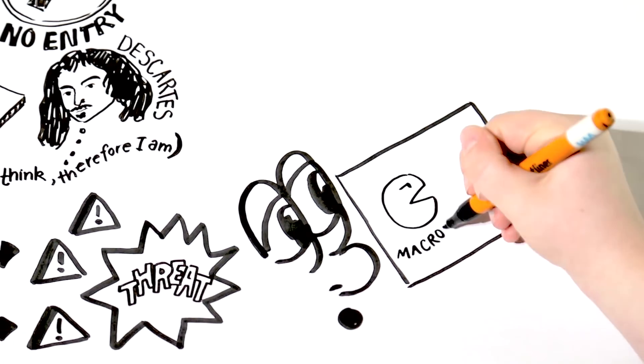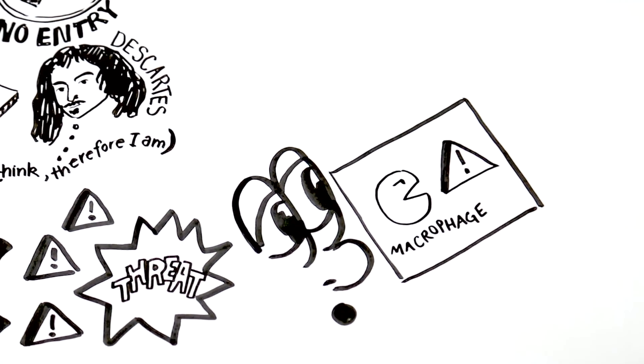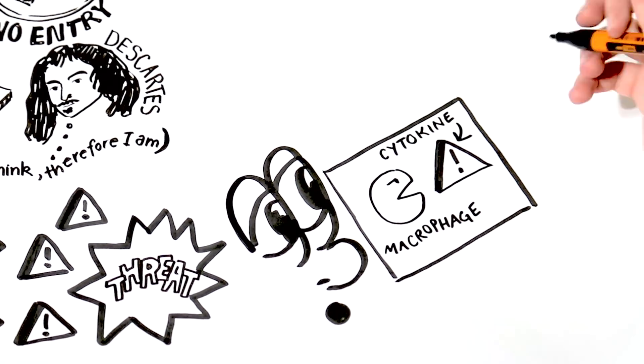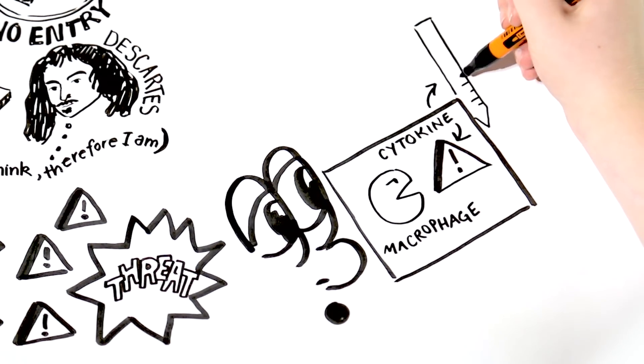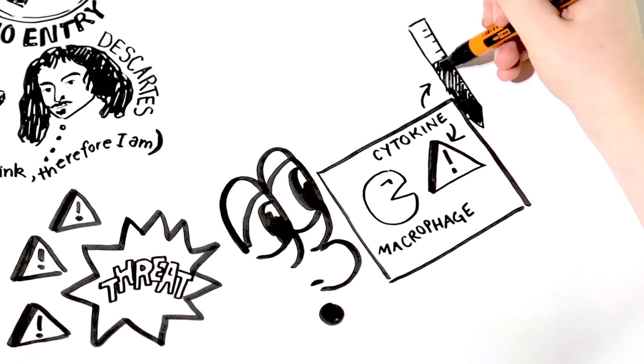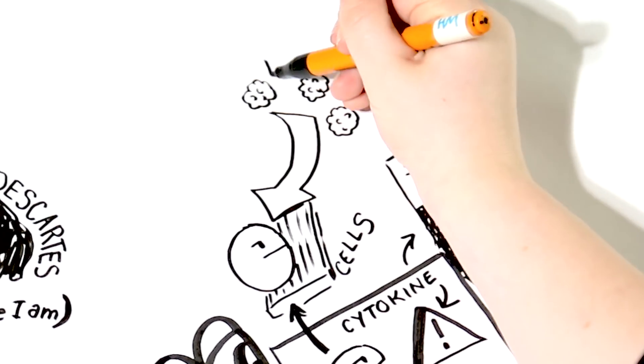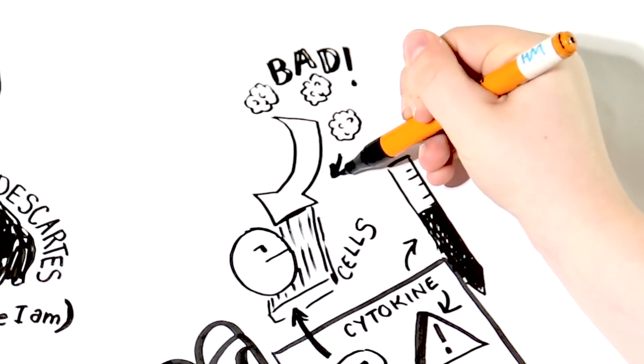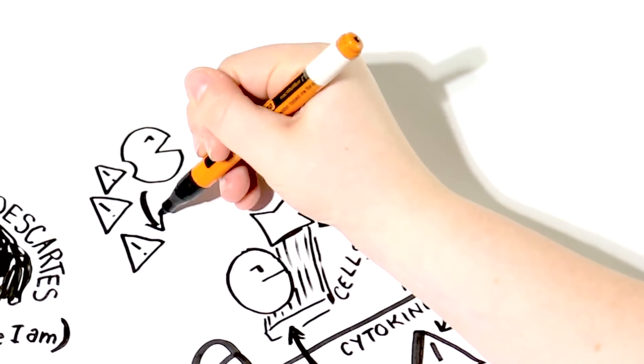We have two things in the diagram here, a macrophage and a cytokine. A cytokine is a protein that communicates inflammatory signals throughout the body. A macrophage is like a foot soldier that guards a particular patch of cells in the body from invasions.